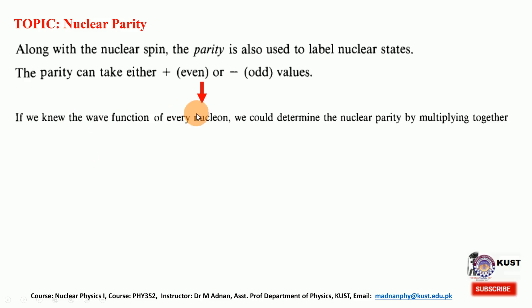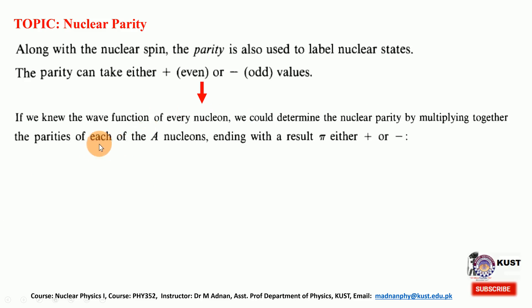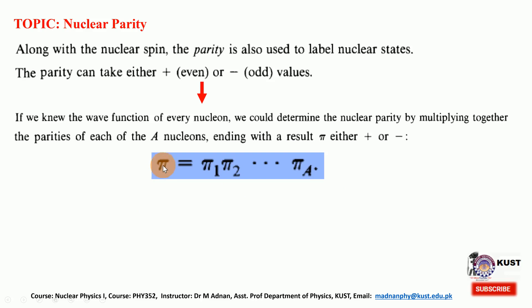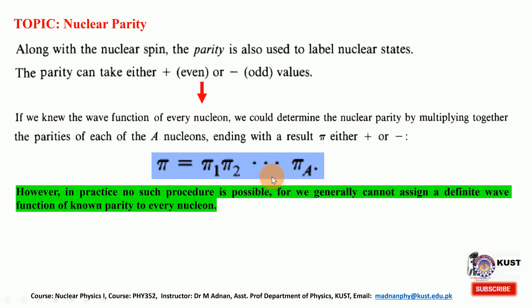If we know the wave function of every nucleon, we would determine the nuclear parity by multiplying together the parities of each of the A nucleons, ending with the result pi, which is either plus or minus. Since parity pi is equal to minus 1 to the power l, multiplying all nucleon parities can give either a plus or minus sign. However, in practice no such procedure is possible, since we generally cannot assign a definite wave function of a known parity to every nucleon.